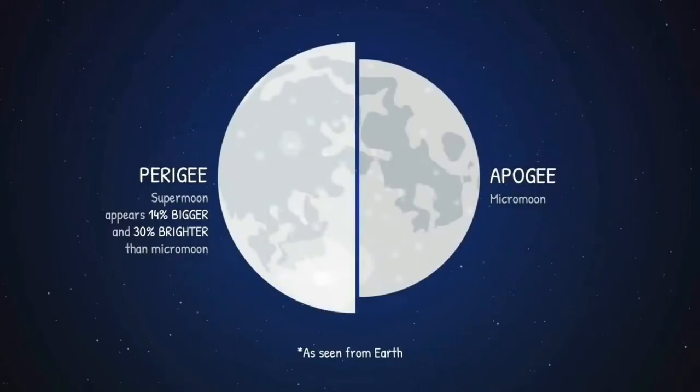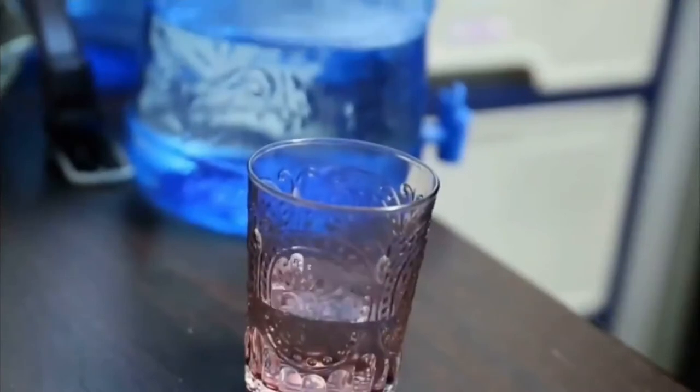A lunar eclipse can happen only on the night of a full moon. Lunar eclipses are also known to have predicted earthquakes.